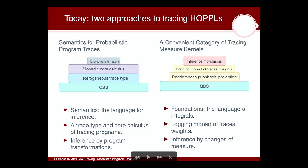In the second abstract, a convenient category of tracing measure kernels, we look at the categorical domain in which we are giving semantics, and we ask, can we add traces, likelihood weights, and densities to that domain so that we can map from an arbitrary syntax into this categorical domain and be able to reason about densities, traces, and inference. There we'll be considering inference as change-of-measure ratios.